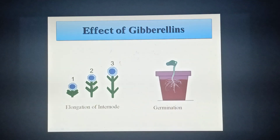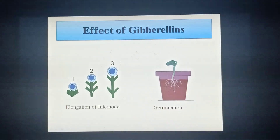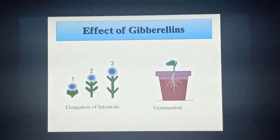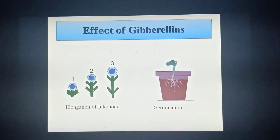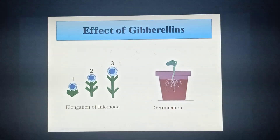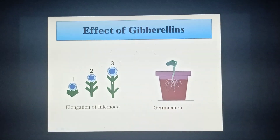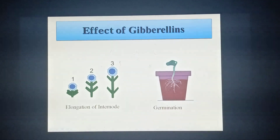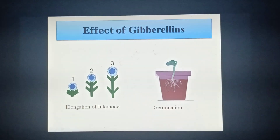Looking at the pictures, the first picture shows a dwarf plant, and this dwarf plant gradually grows in height — it transforms into a tall plant because of the influence of gibberellin. This portion of the stem from where a leaf is developed is called a node. The portion between two nodes is called an internode. Due to the effect of gibberellin, the internode elongates, and this is why the dwarf plant grows in height. Gibberellin also helps in the germination process of plants.